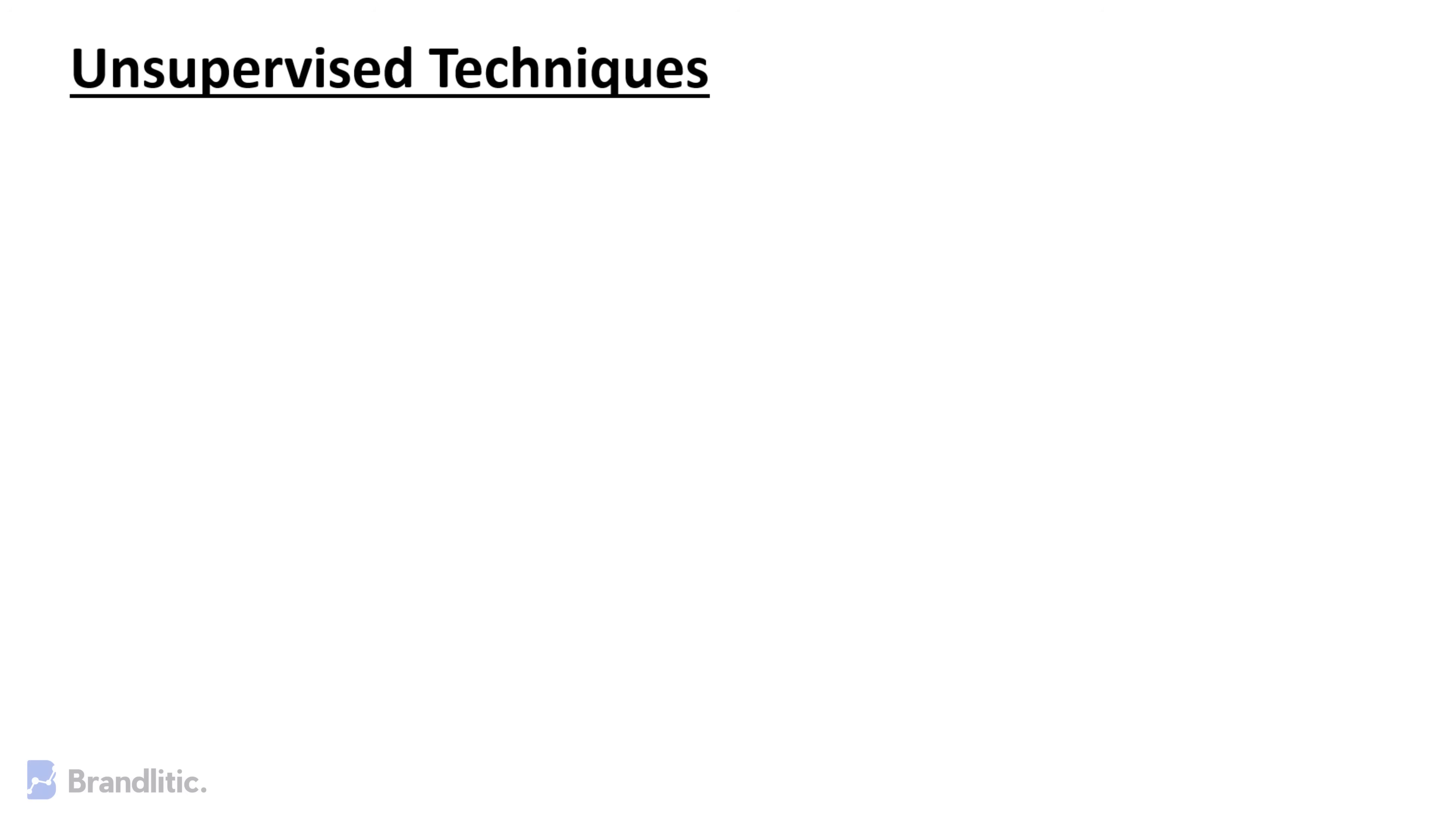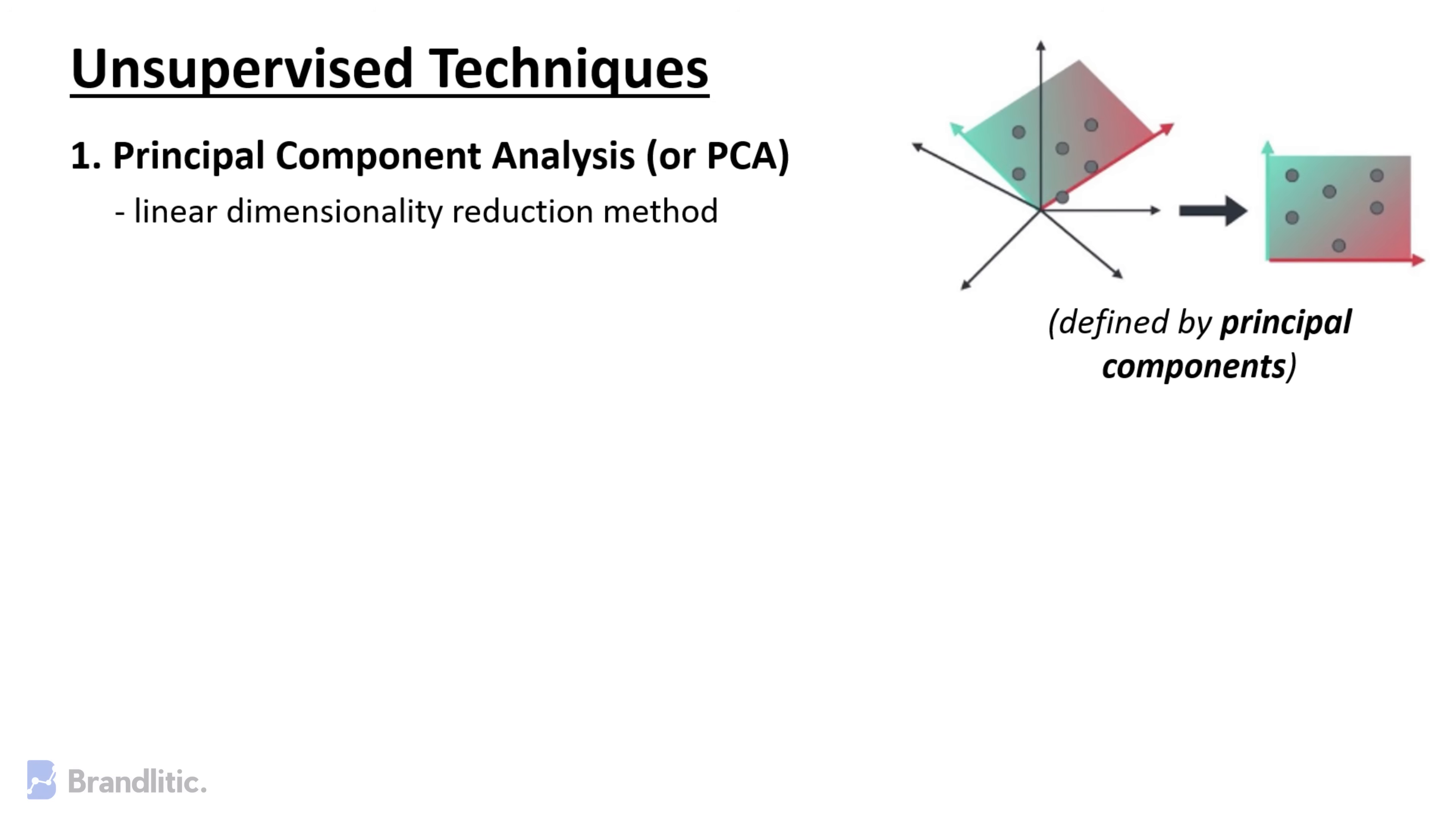Some notable techniques that come under this branch include Principal Component Analysis or PCA, which is a linear dimensionality reduction method that converts the original feature space into a new orthonormal space defined by principal components. These components are linear combinations of the original features chosen to capture the highest level of variance in the data.